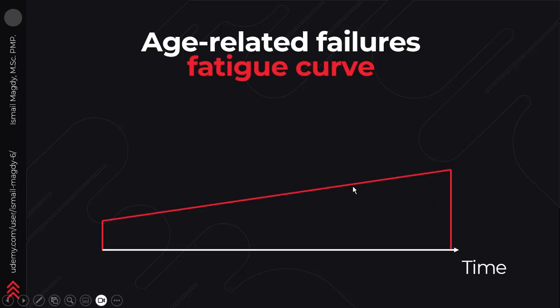Here we can see the third age-related failure pattern, which is called the fatigue curve. In this curve the rate of failures is increasing in a linear way.